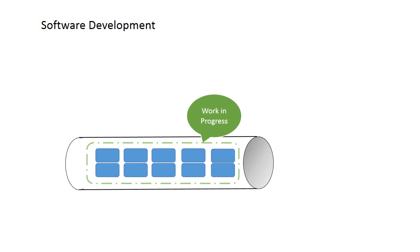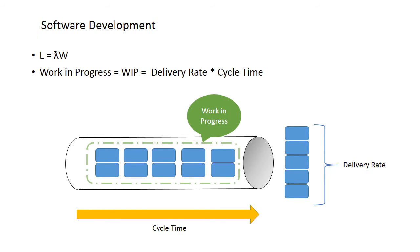What does this mean in software? In software development, the items in the pipe are work items in development, and we call that work in progress. The time in the pipe is the development cycle time, and the delivery rate is just that. So the work in progress, often called the WIP, equals the delivery rate multiplied by the cycle time.